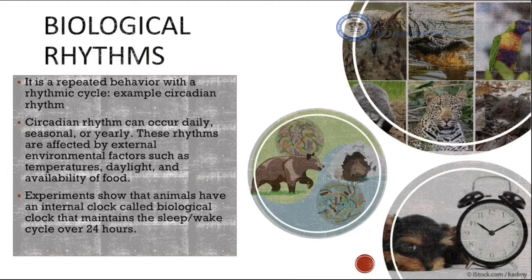Now concerning biological rhythms: biological rhythms are repeated behaviors with a rhythmic cycle. For example, the circadian rhythm is a repeated rhythm in organisms that can occur daily, seasonally, or yearly. These rhythms are affected by environmental factors such as temperature, the amount of daylight, hours of darkness, and availability of food.